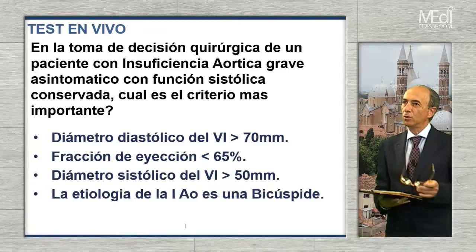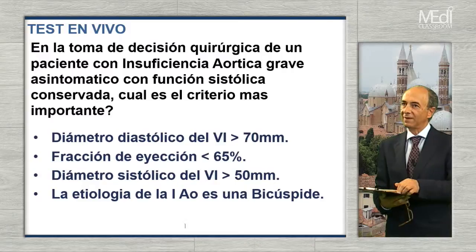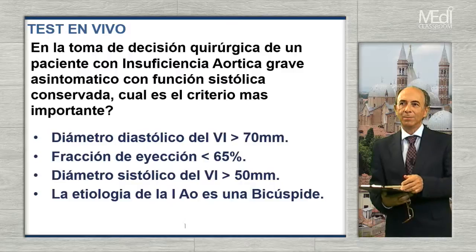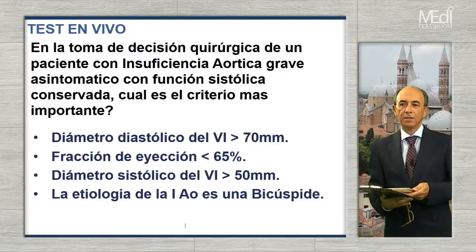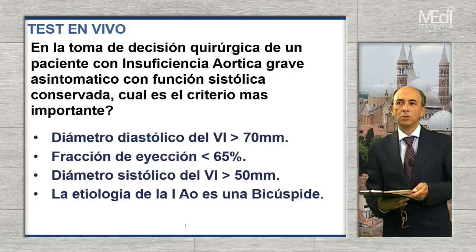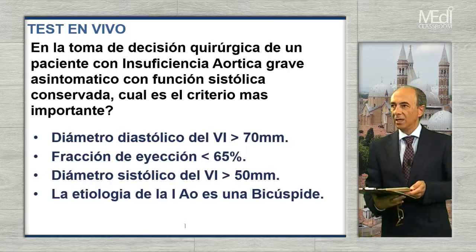Interrumpimos el debate por un momento. Os invitamos a contestar una pregunta: en la toma de decisión quirúrgica de un paciente con insuficiencia aórtica grave asintomático con función sistólica conservada, ¿cuál es el criterio más importante? Las opciones son: A) diámetro diastólico del ventrículo izquierdo mayor de 70 mm; B) fracción de eyección menor de 65%; C) diámetro sistólico del ventrículo izquierdo mayor de 50 mm; o D) etiología de aorta bicúspide. Para participar, reducid la ventana de video y picad sobre el ícono rojo con la inscripción 'test live'.